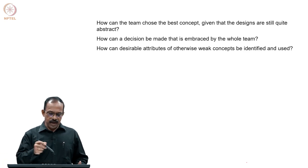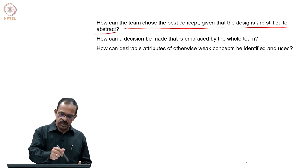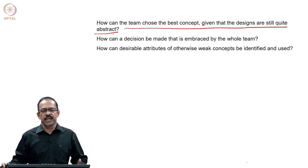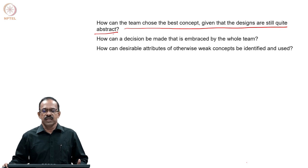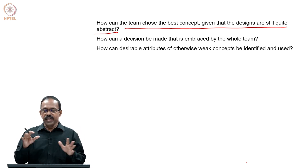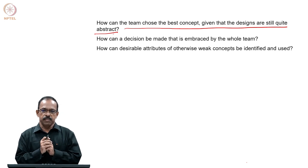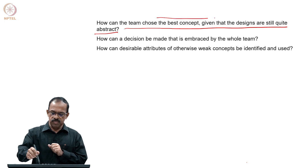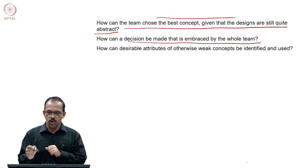The objective is how the team can choose the best concepts given that the designs are quite abstract. We still do not have a detailed design — we are at a very abstract level and have not gone into material properties, machining requirements, and so on. But we have some understanding of how these concepts can be implemented. Under that situation, how can we choose the best concept?